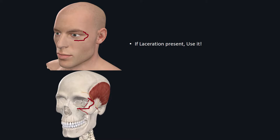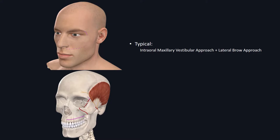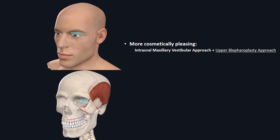Next, we'll discuss various surgical approaches used in ZMC repair. If you have a pre-existing laceration overlying the fracture site, consider using it, possibly adding additional approaches for adequate exposure. In situations without pre-existing laceration, you can use the intraoral maxillary vestibular approach and lateral brow approach. You can replace the lateral brow approach with a more cosmetically pleasing upper blepharoplasty approach, which may be beneficial in younger patients with sensitivity to cosmesis.